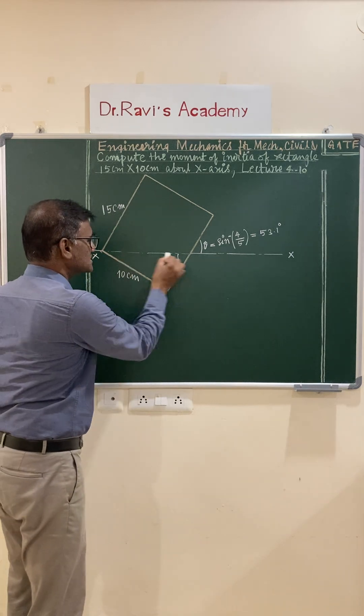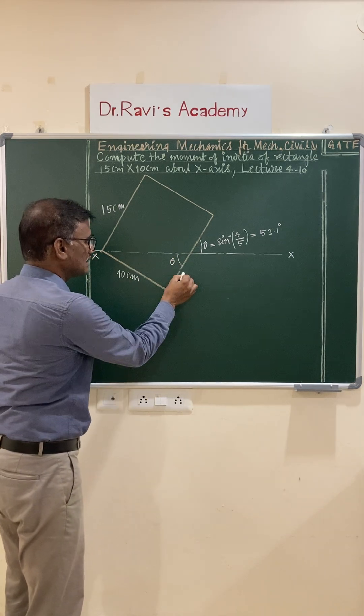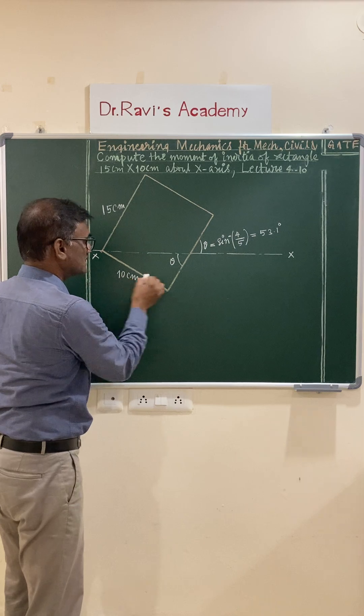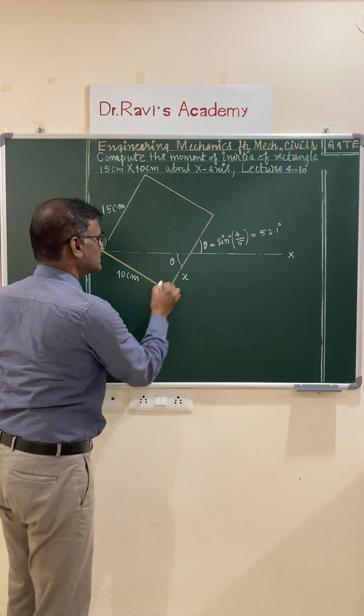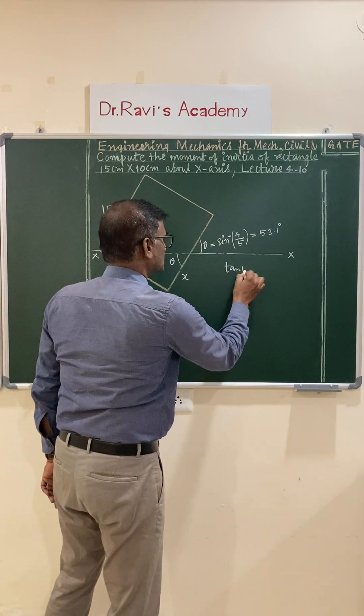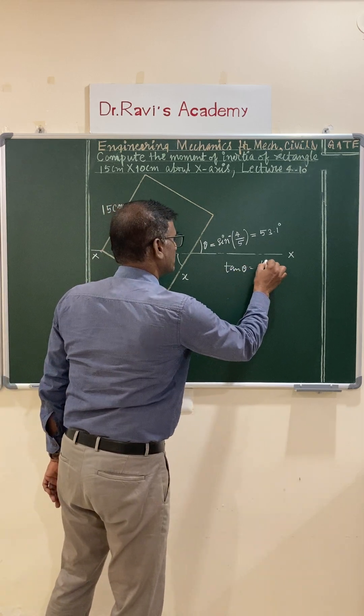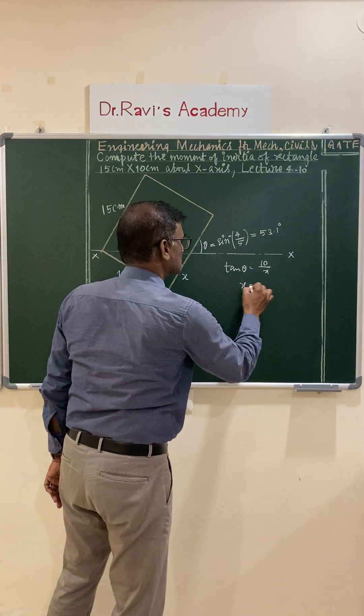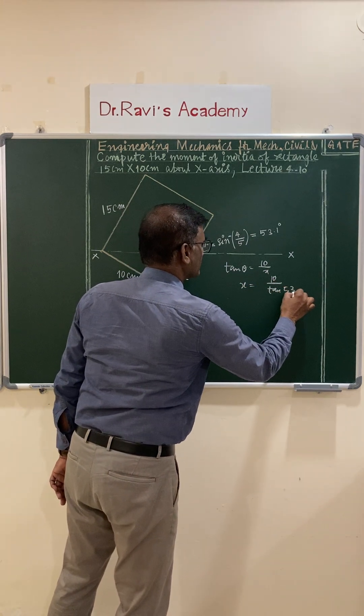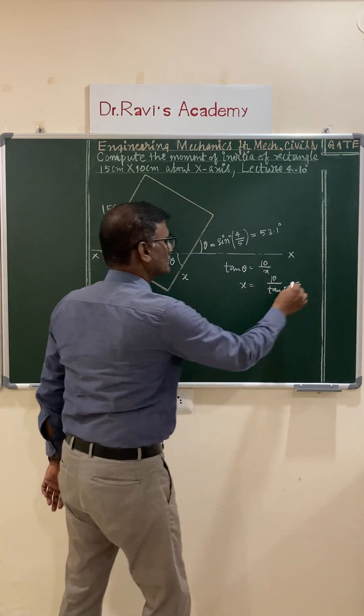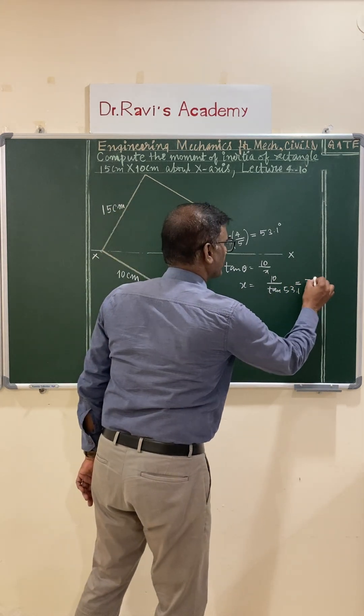Using this angle from this right triangle, you can calculate this side. This becomes opposite and this is adjacent, so you can write down tan theta. Treat this as x value. Tan theta equals opposite, 10, divided by x. So x equals 10 divided by tan 53.1.